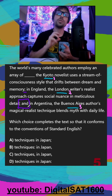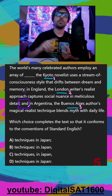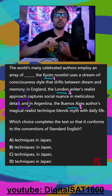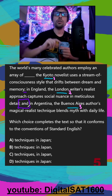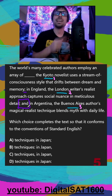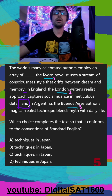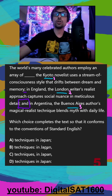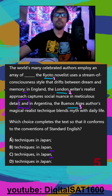We should also notice in these problems it's all about parallel structure. Notice how Argentina comma Buenos Aires, England comma London — that means it should be Japan comma Kyoto. So automatically we can get rid of A and D for that reason.